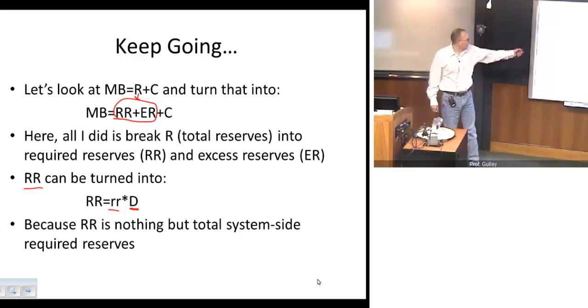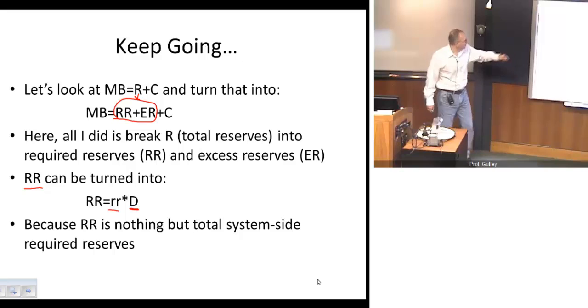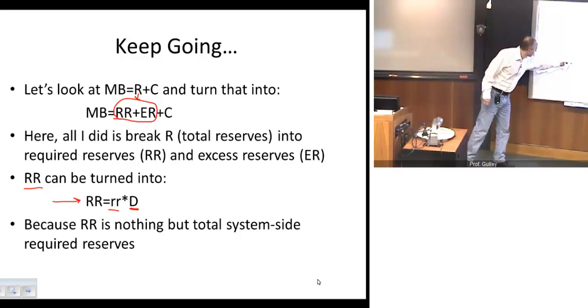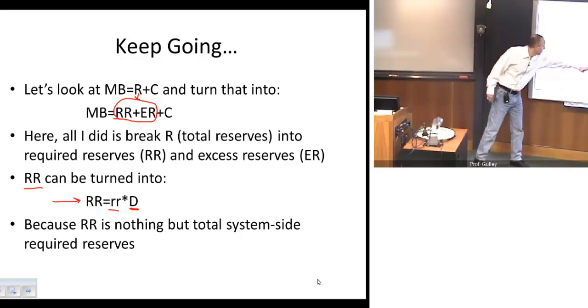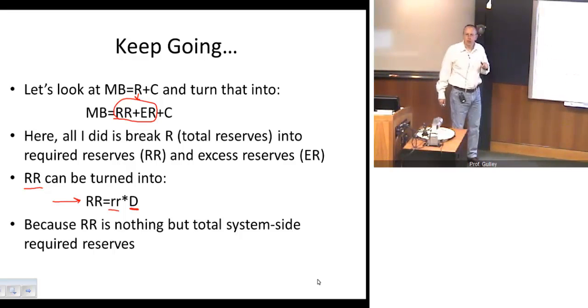So using our 10% figure and our fake, you know, say initial $1,000 deposit that we used in the previous video, that $1,000 deposit times 10%, that's $100. So required reserves for that particular bank would be $100. This figure, of course, is not the required reserves for a particular bank, it's the total reserves system-wide. So we will have, you know, billions of dollars or trillions of dollars of deposits times 10% to give us total system-wide required reserves.